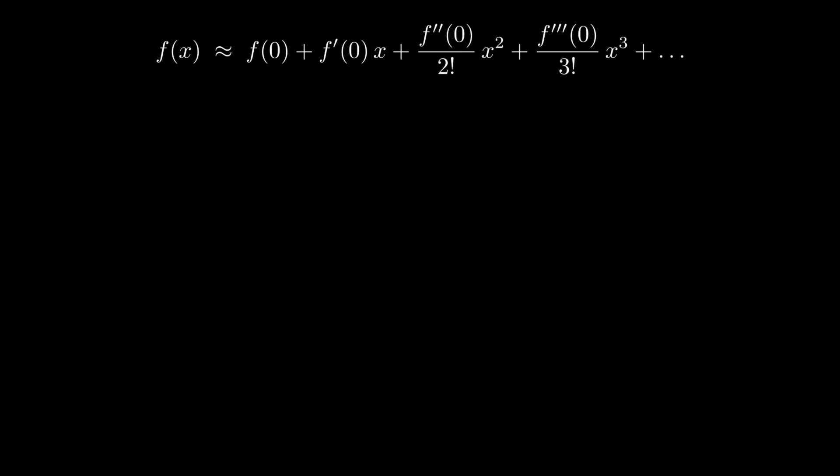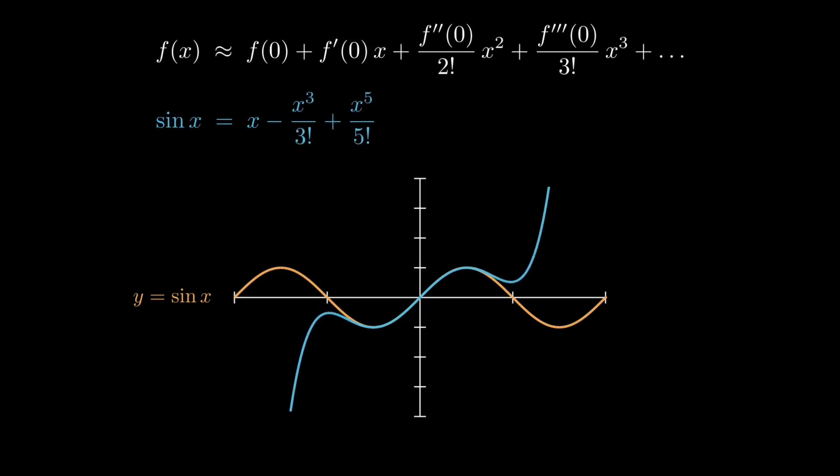To understand this more intuitively, let's take a familiar function, say sine of x and build its Taylor expansion term by term. We start with the first term, sine of x equals x and that's just a straight line approximation. Now if we add more terms, so say the next one is minus x cubed by 3 factorial and then x to the power 5 over 5 factorial minus x to the power 7 over 7 factorial and so on with alternating signs and only odd powers of x.